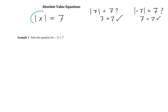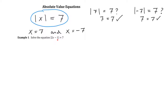The trick to solving any equation of this form is to break it up into two pieces. X has to be 7, but also X equals negative 7 works. Using this idea in example one, it doesn't matter how complicated the expression is inside the absolute value. Just take 2X minus 1 and set it equal to 7 — that gives one solution — and also set it equal to negative 7 for the other.